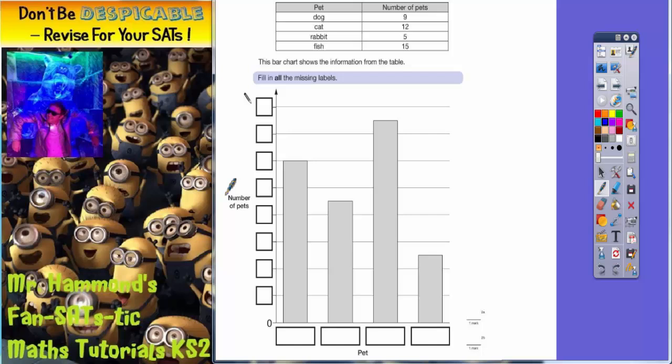But we know that this is going to be the number of pets up the side, and we've also got the label of pet down the bottom. Now we've only got four different pets: dogs, cats, rabbits, and fish, so these are the four labels here. Now the easiest thing to do here is to put them in order of size.